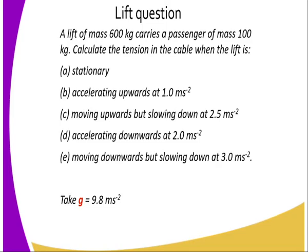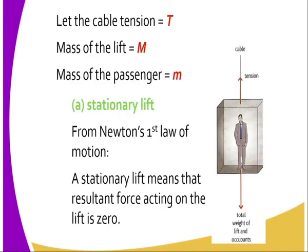We can also look at this question: a lift of mass 600 kg carries a passenger of mass 100 kg. Calculate the tension in the cable when the lift is stationary, accelerating upwards, moving downwards, or accelerating downwards. We need to take gravity as 9.8 m/s².